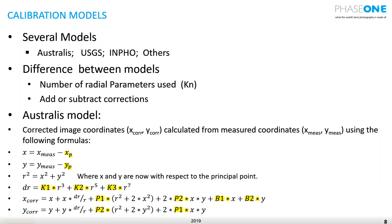We use several models: Australis, USGS, INFO, and others. The difference between the models is usually the number of radial parameters used — the kN values — and whether we add or subtract the correction. Most of the Brown models are the same; the difference is in the number of k values and whether we add or subtract the corrections.